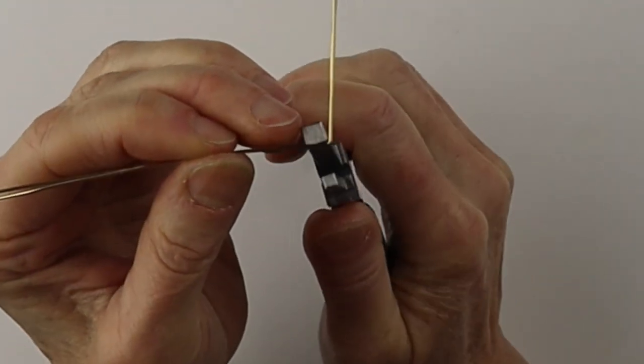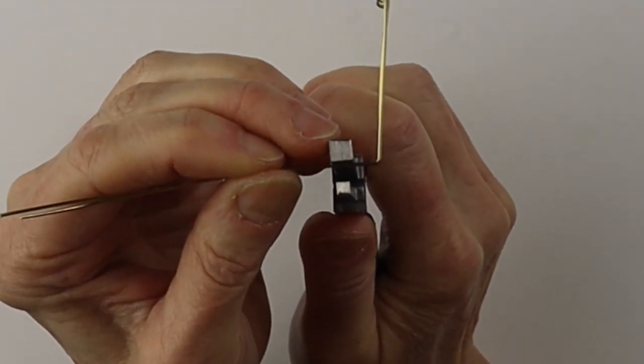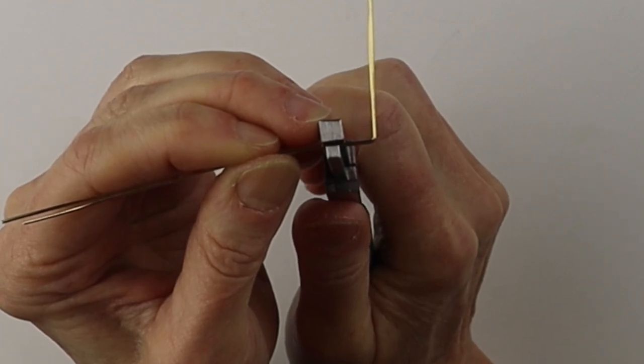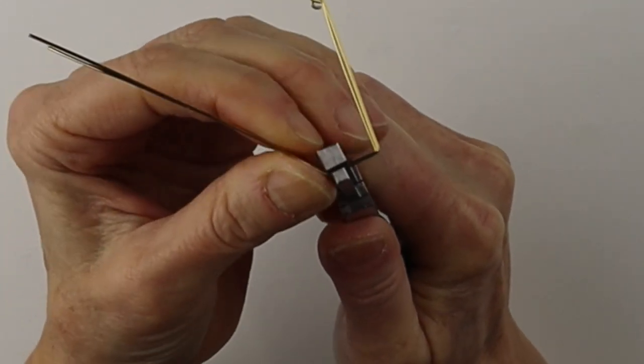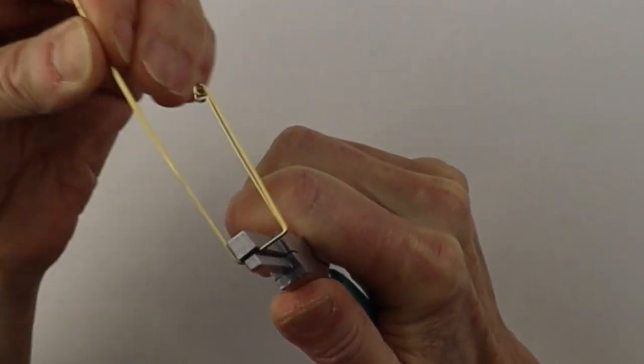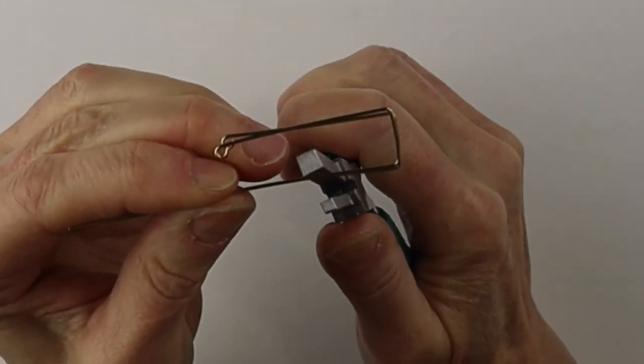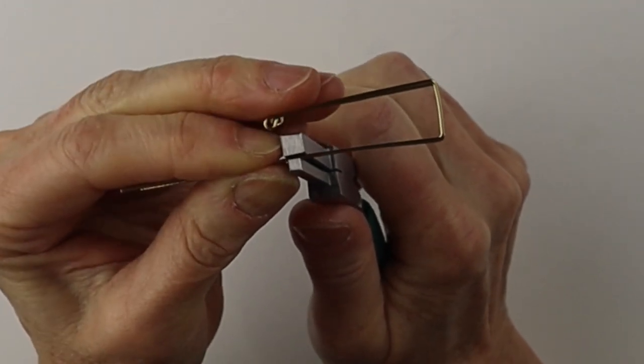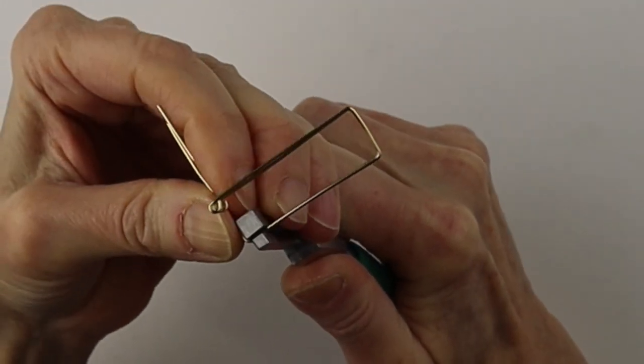Then we're going to take this and depending on how wide you want them, we're going to hold them together and push again with our thumb. Straighten them out and then at the height that you want, we're just going to hold this in place and push that straight across.